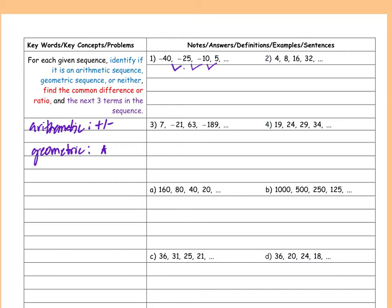If I'm adding or subtracting, my interval between the numbers is the same. If I'm multiplying, the difference between numbers spreads out — either getting closer together or further apart depending on direction. So if the numbers look like they're the same distance apart, I'm either adding or subtracting. Mathematically, I take these two terms: negative 25 minus negative 40, and that equals 15. Then negative 10 minus negative 25 also equals 15. And 5 minus negative 10 is also 15.